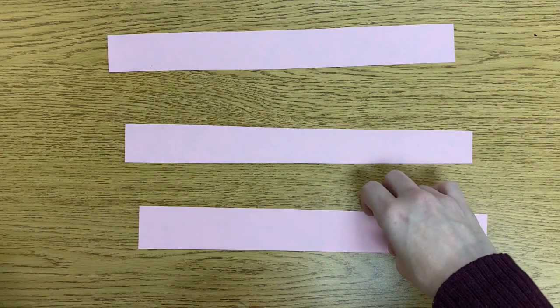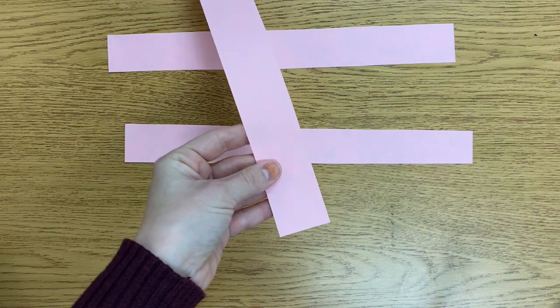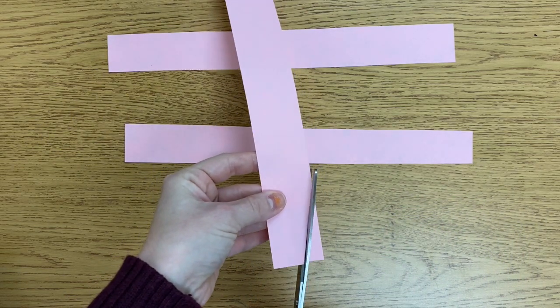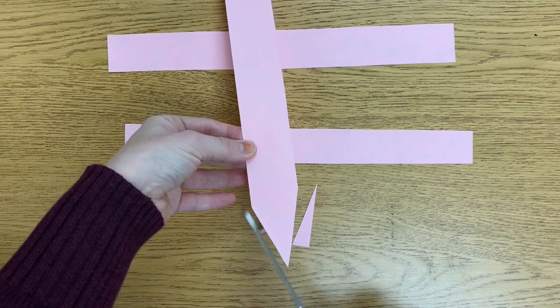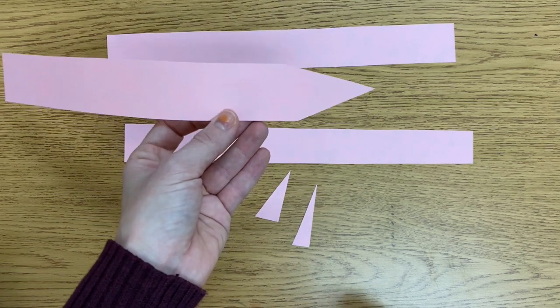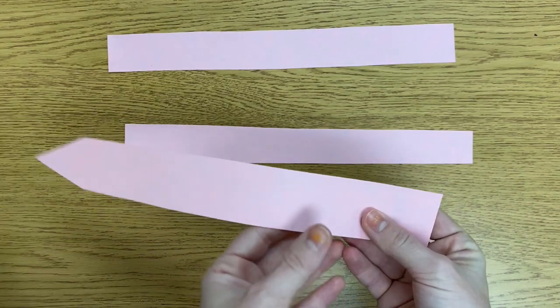Now that you have your strips, we need to make these look a bit more like snakes. So I'm going to take my scissors. And again, just like I did with my grass, I'm going to cut a V shape on one side. And on the other side, I'm going to cut a curved line.